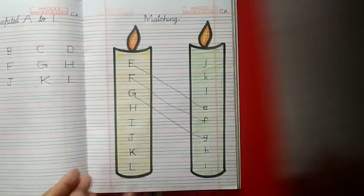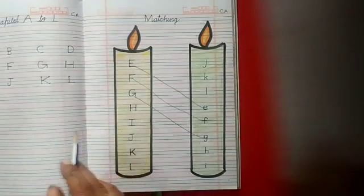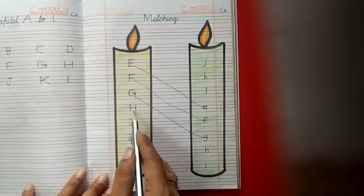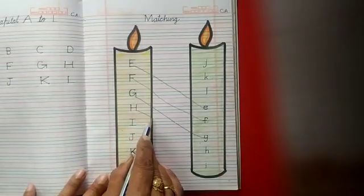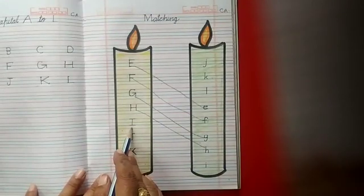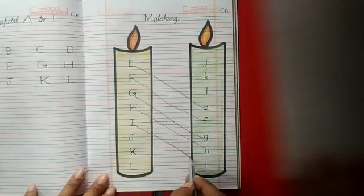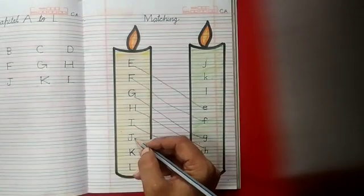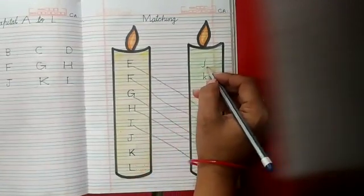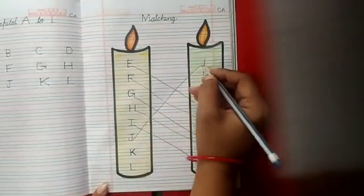Main dekh sakti hoon, aap mere se pehle bata rahe ho ki maam yahan par E ki letter, E ki letter — now, read the letter. H. And where is the baby H? Here is the baby H. We match mama H to baby h. I — mama I. And here is the baby i. So we match mama I to baby i. G — mama G. And here is the baby g. So we match mama G to baby g. Very good.